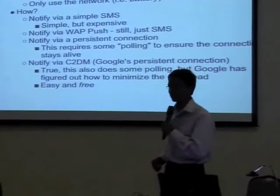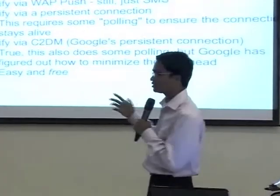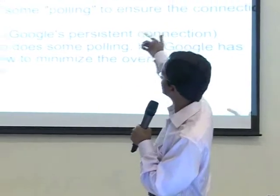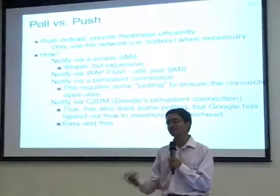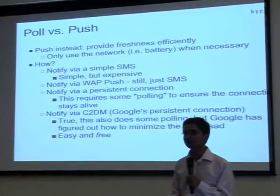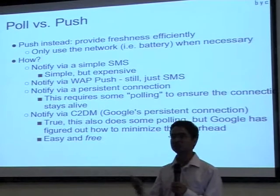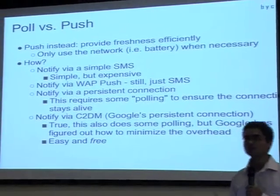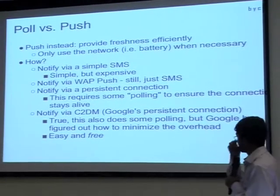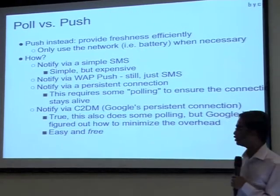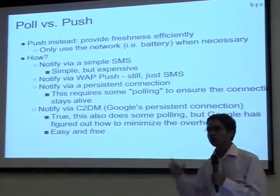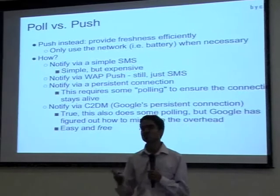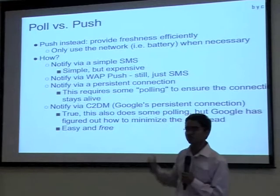Another way is using a persistent connection, which stays alive and uses a very low amount of battery. There's also WAP, but in the end WAP also requires an SMS to be sent to the device, which then fetches data based on that SMS. Instead of that, we are going to look into C2DM, which is Google's persistent connection. It is free and has already been installed on devices during manufacturing, so instead of providing your own persistent service — which draws additional battery — you can use the existing service provided by Google.